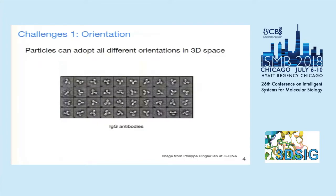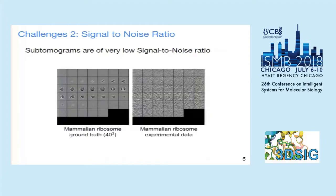There are three challenges for structural recovery from subtomograms. The first one is orientation — cellular particles can adopt all different orientations in 3D space. For example, those IgG antibodies you can see have different orientations. The second challenge is signal-to-noise ratio.